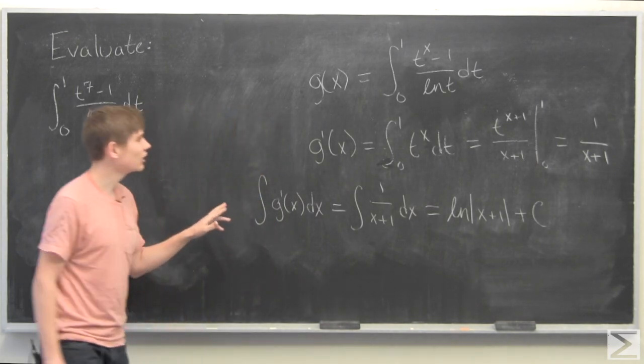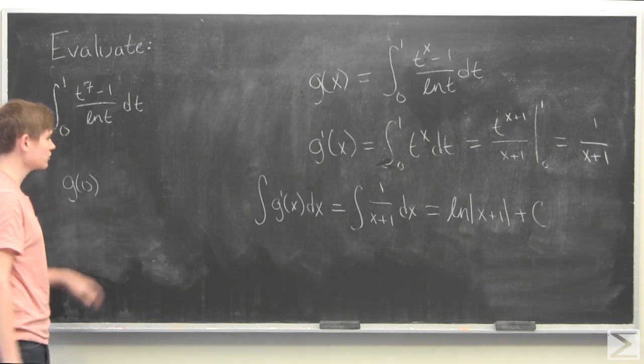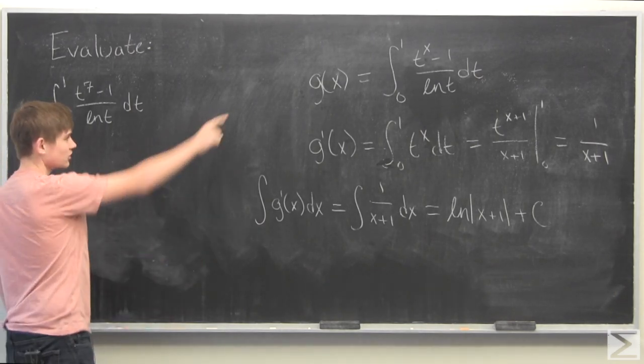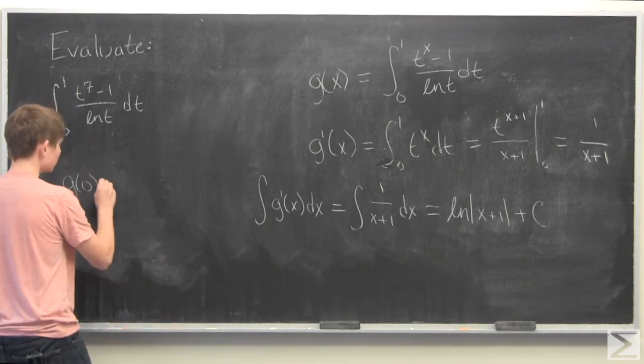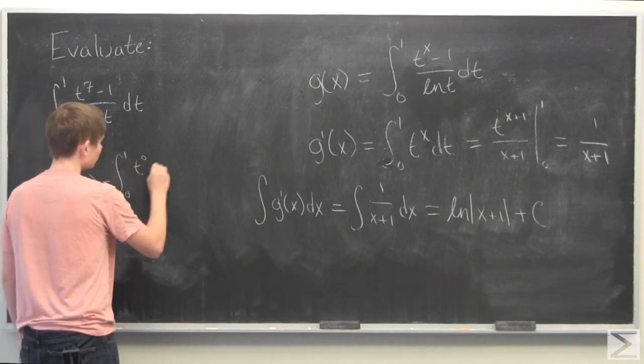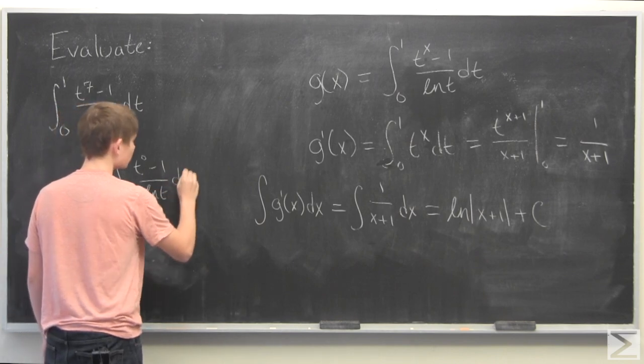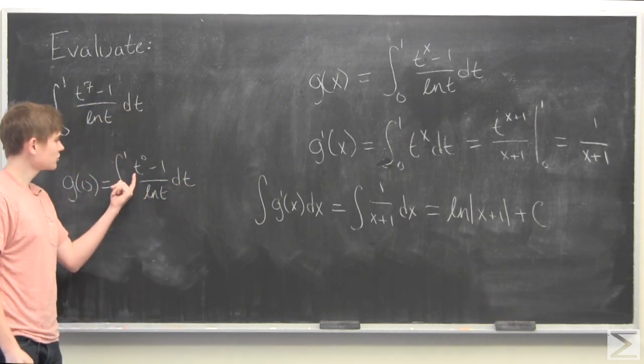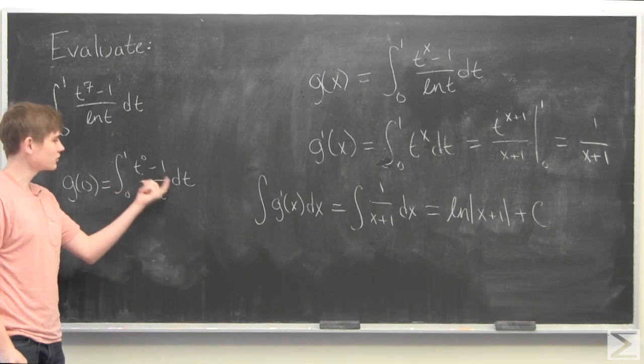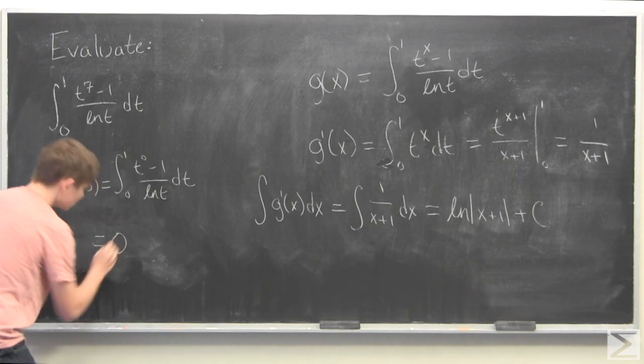We have to figure out what that constant is to get back to g of x. If you notice, if we have g of 0 and we use this definition of g of x, this is equal to the integral of this. However, t to 0 is 1, so we have 1 minus 1, which is 0. So this becomes 0.